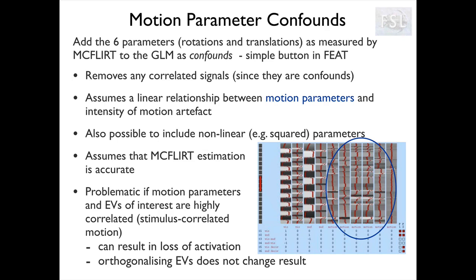For example, in the word generation and word shadowing experiment that we saw in the practical, we asked the subjects to think about the words and not to speak out loud so we could minimize the motion related to the task.